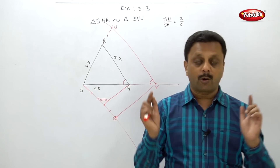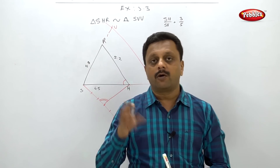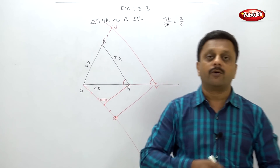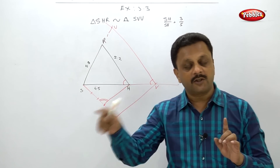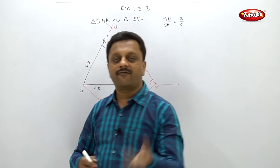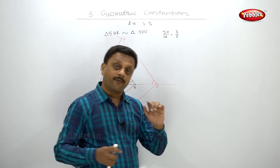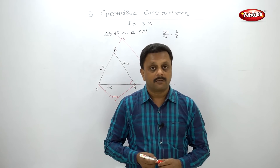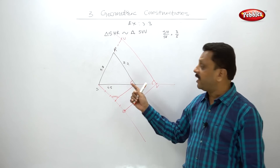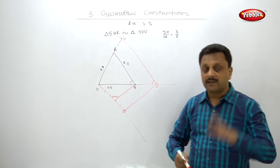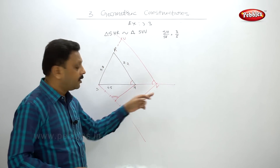Some students have broken-edge scales — the plastic scale is old and edges are broken, so they cannot start at zero. They start at one, but when drawing a 5.4 cm line, they forget they started from one and draw only up to 5.4 instead of 6.4. The figure will look similar but your answer will be wrong — for example, if they ask you to find the length of SU or UV, that will be wrong.